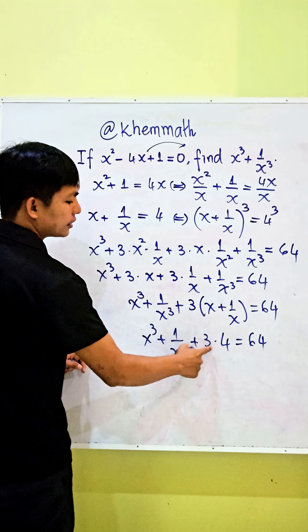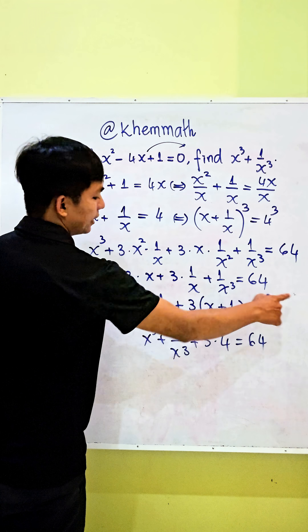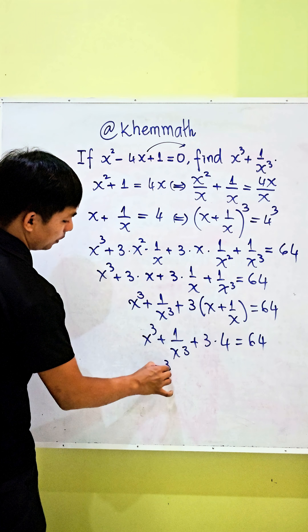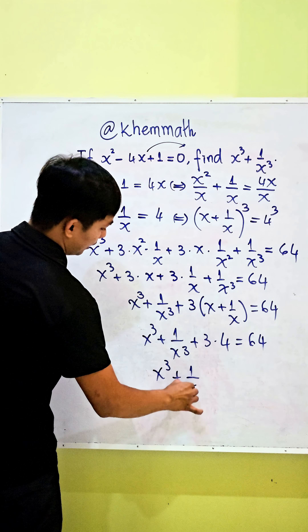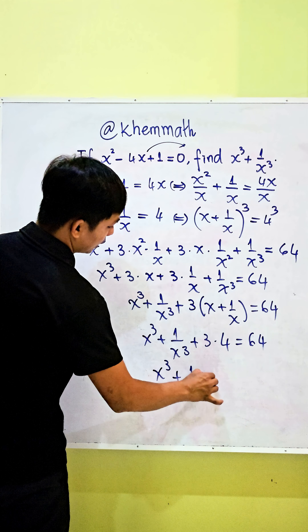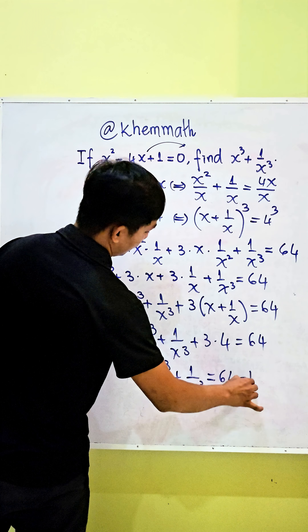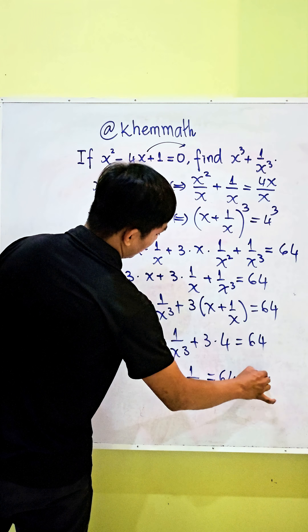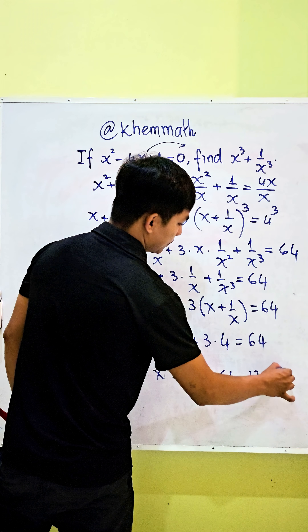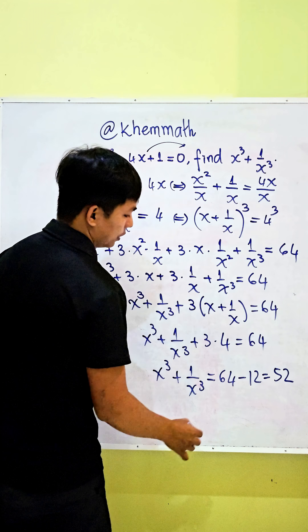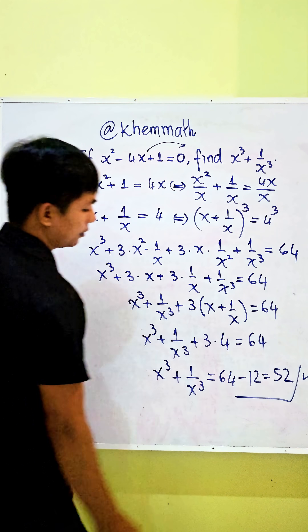Here 3 times 4 equals 12, and we move it to the right-hand side. We get x cubed plus 1 divided by x cubed equals 64 minus 12, which equals 52. That's our answer.